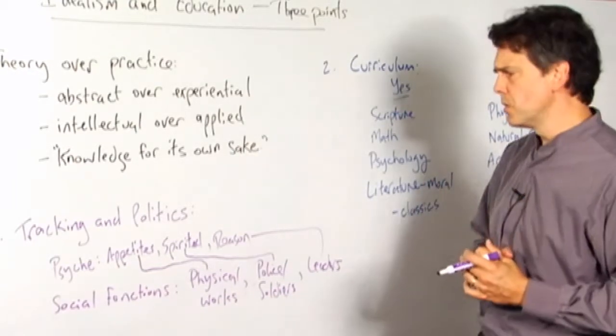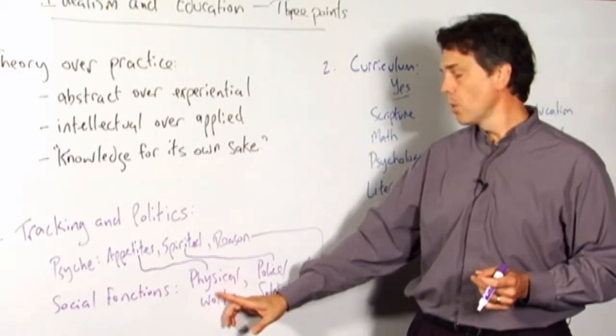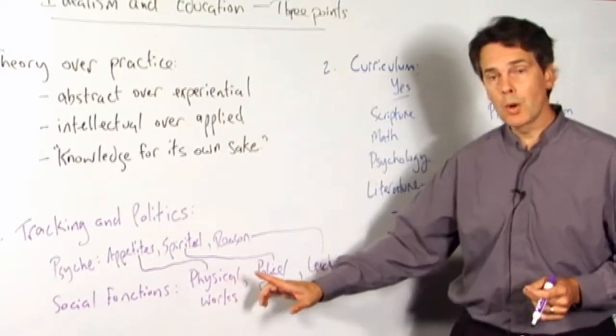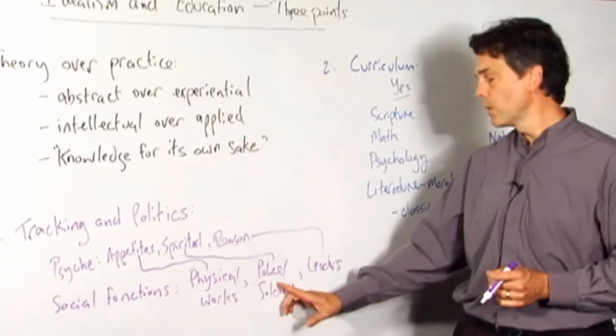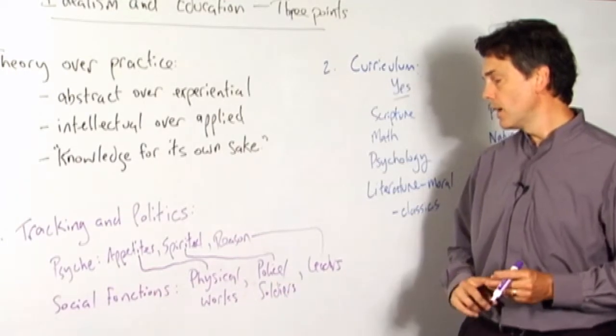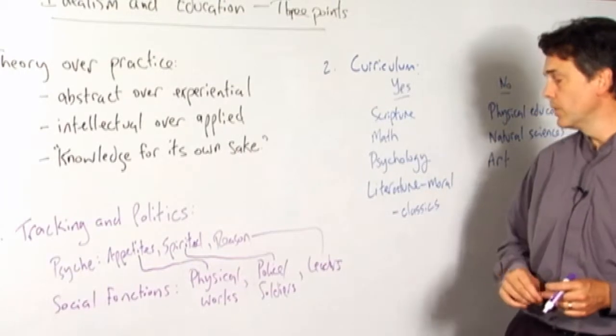So Plato then goes on to conclude, it makes sense that we would have one kind of education that is appropriate for the people who are going to end up doing more physical work, another kind of education that's more appropriate for people who are going to end up in this line of work, and another kind of education that's appropriate for people who are in this kind of work.